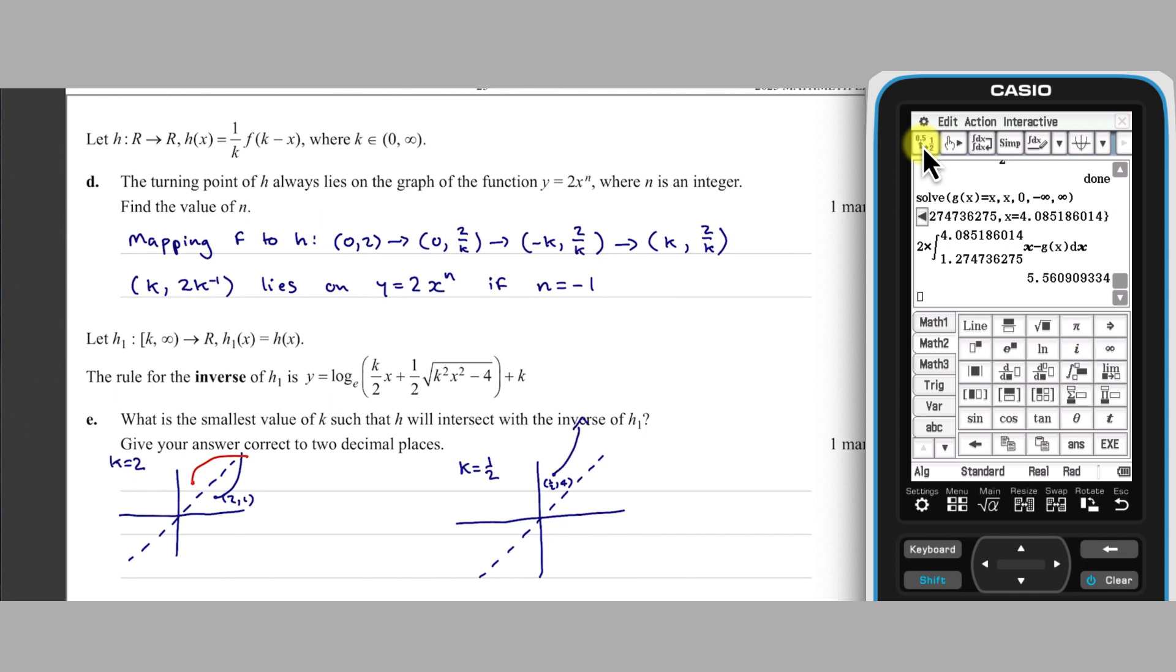If the function then curves away from Y equals X, they will not intersect, and so the function will not intersect its inverse. So now we have to find the smallest value of K, such that this intersection will occur.